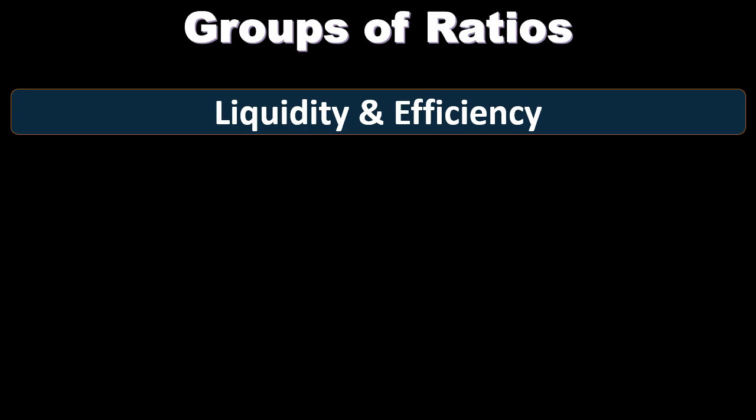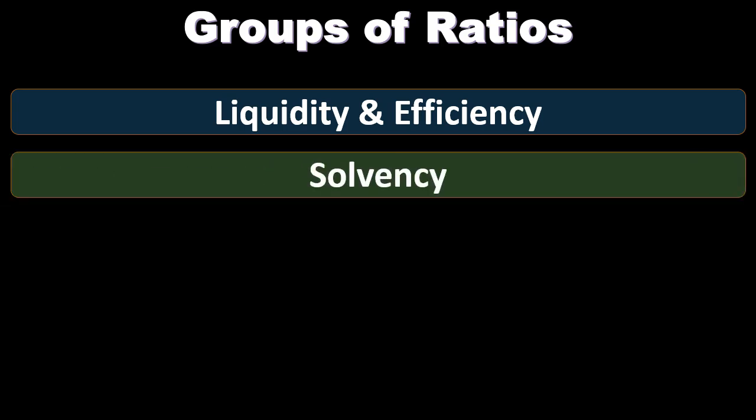We looked at liquidity and efficiency; we're now going to be looking at solvency ratios. Solvency represents a company's long-term financial viability and its ability to cover long-term obligations, as opposed to liquidity and efficiency where we were considering the short-term obligations — whether the company is going to be able to pay off its debts due within a year.